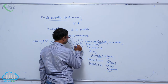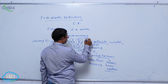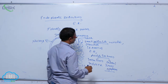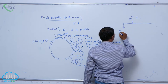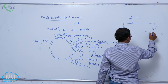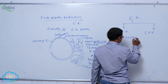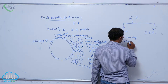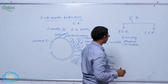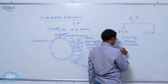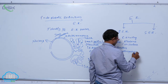The endoplasmic reticulum is divided into two types: RER and SER. RER is the endoplasmic reticulum that has ribosomes on its surface. RER is mainly involved in two functions: protein synthesis and secretion.